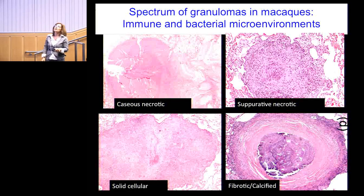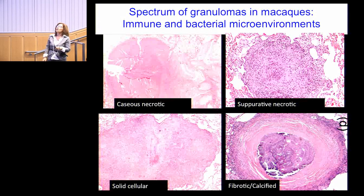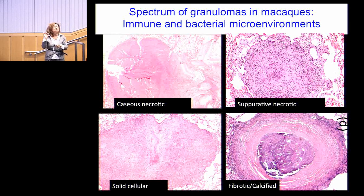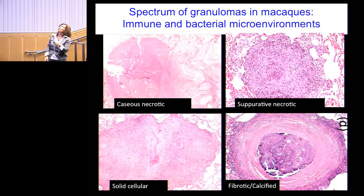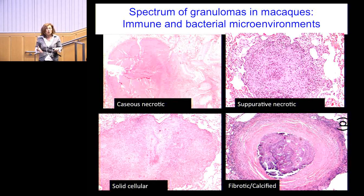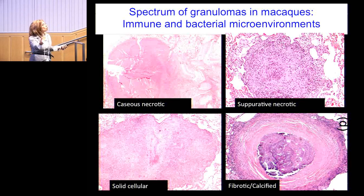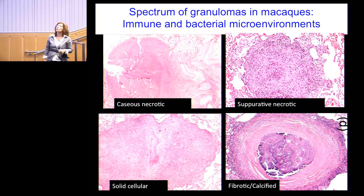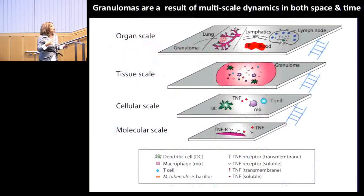We're trying to understand things at the scale of the granuloma because that's really where the story lies. Here you see lots of purple spots — those are nuclei — so there's tons of cells that have come in and formed this spherical structure. This very old one has had fibrotic calcification happen and the fibrotic process has walled it off; it actually looks white like bone on an X-ray — these are the ones we refer to as tubercles. Others have a lot of dead tissue in the middle from different processes.